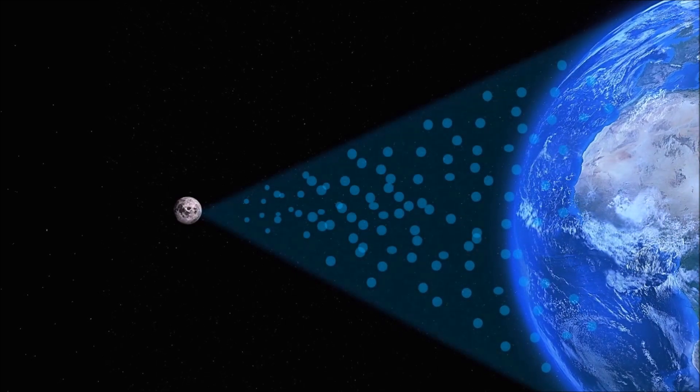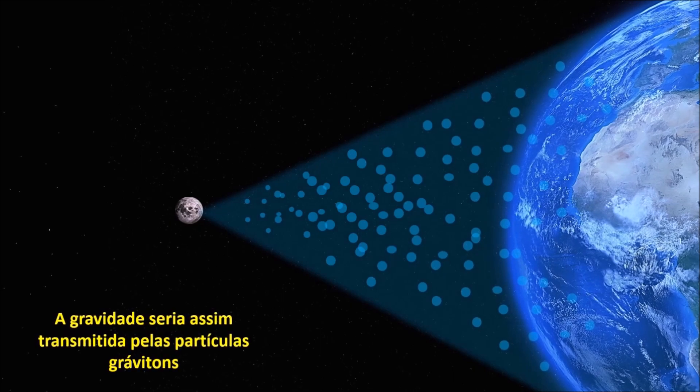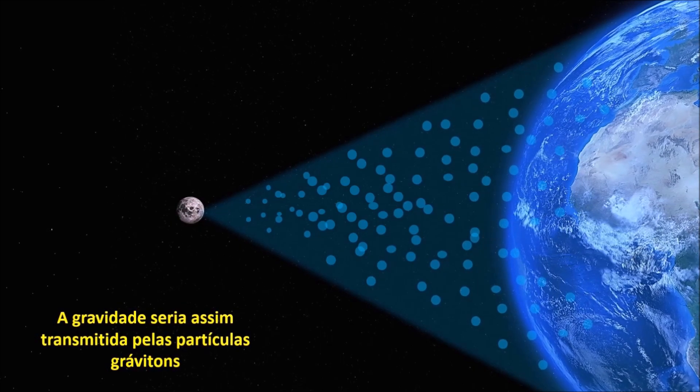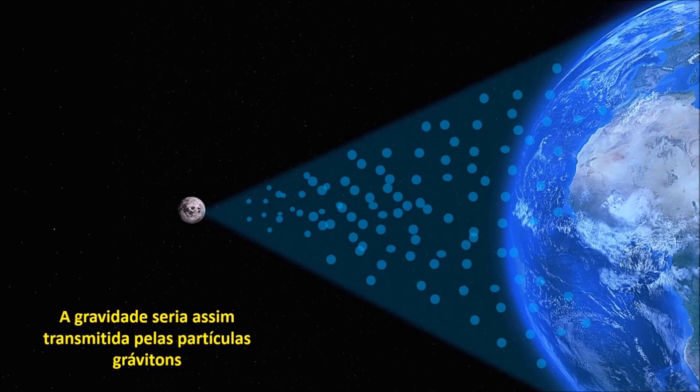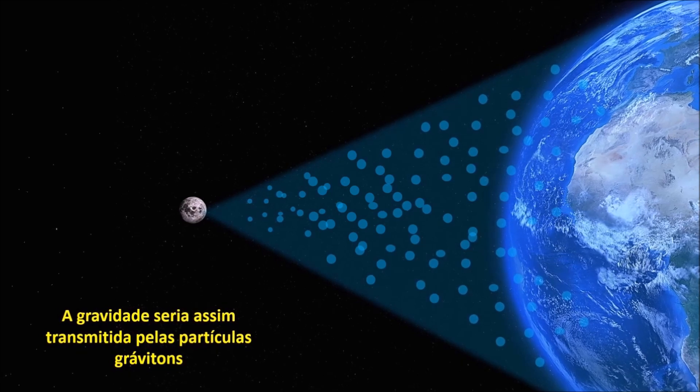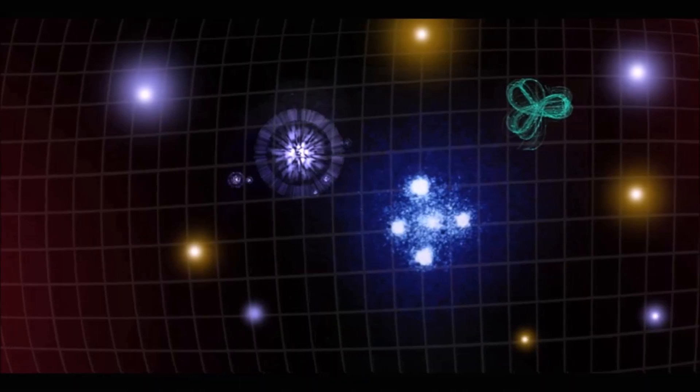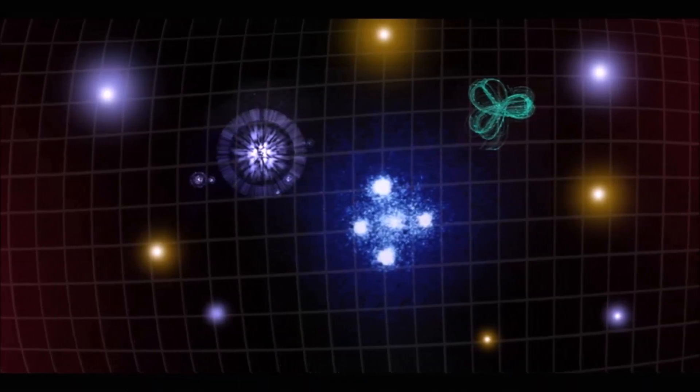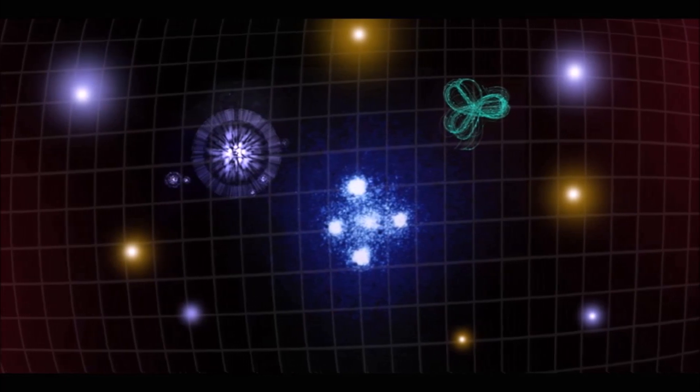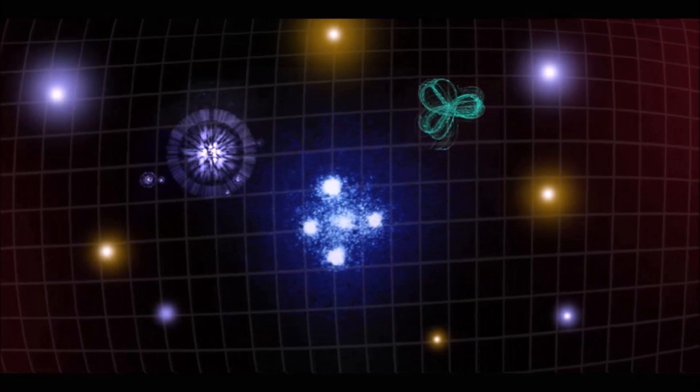Na maioria das teorias que prevê a existência dos gravitons, eles sempre são descritos como partículas que exerceriam forças de atração entre corpos e atuando além de qualquer distância. A física ainda diz que se realmente essas partículas de fato existirem, deve pertencer à categoria de partícula descrita como bósons, e que teria spin par igual a 2 e massa igual a 0, segundo a mecânica quântica.